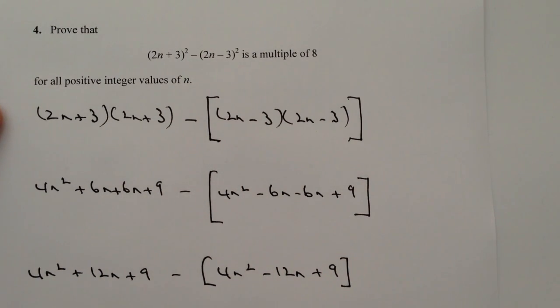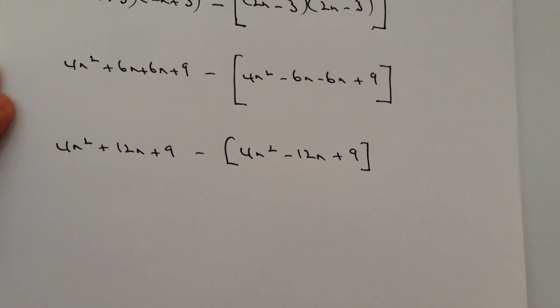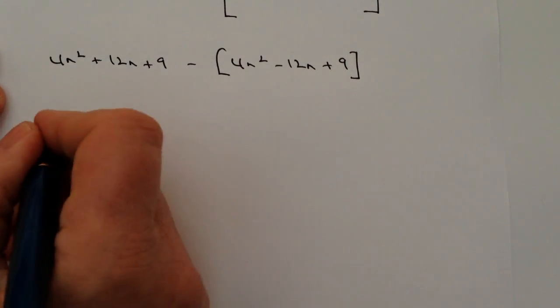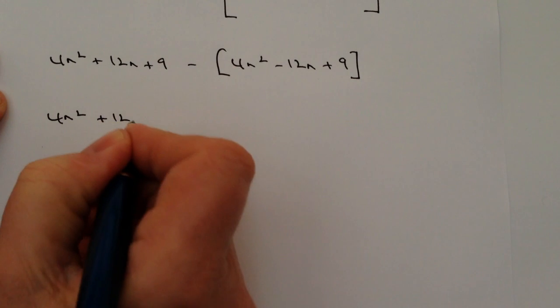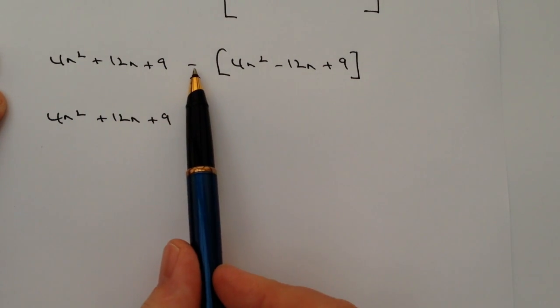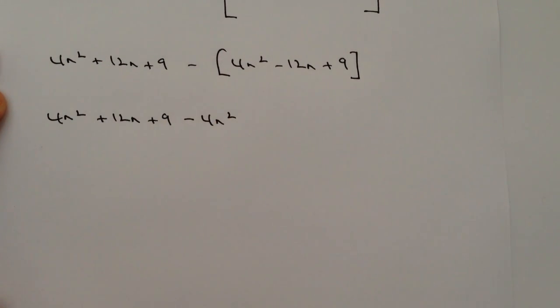Right, let's remove that bracket. So if I just move the paper up a little bit here. There we go. So we've got now 4n squared plus 12n plus 9. So the first one is fairly straightforward. We've got minus 4n squared.